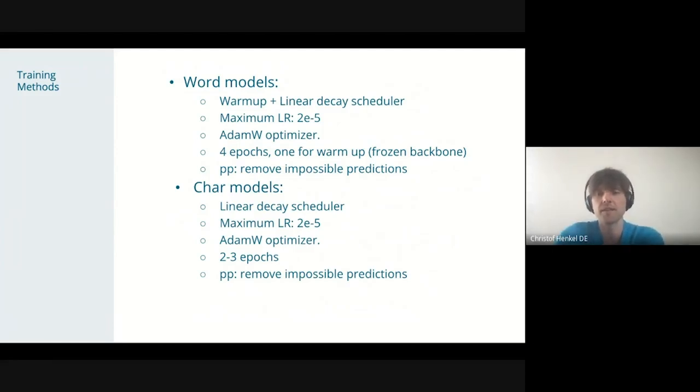And also the overall hyperparameters were quite similar. So we use the linear decay learning rate schedule, we use the initial learning rate of 2e-5, and we use the AdamW optimizer. And then we trained for the word model a little bit longer for four epochs, with one warm-up epoch where we froze the backbone. And the character model, we trained a little bit less, because you have way more free and newly initialized parameters, the model tends to overfit way faster. And for both, we removed impossible predictions at the end. So when you predict the text, you basically have paddings and classification tokens and that kind of stuff. And of course, it doesn't make sense to use that as a prediction. So we force the model to only make meaningful predictions.